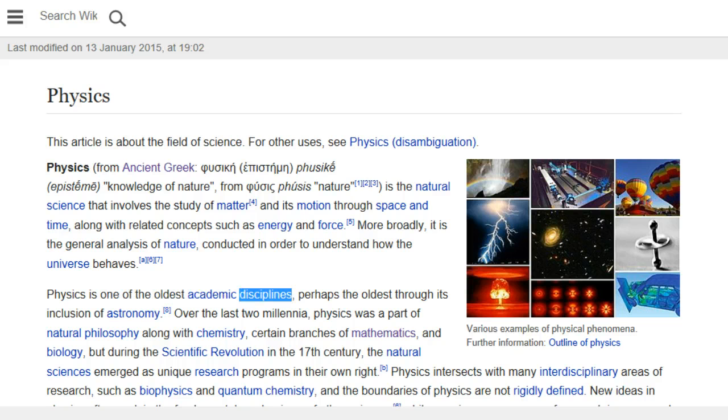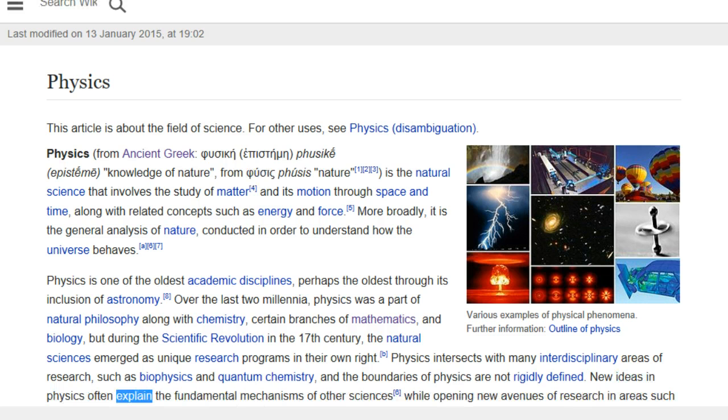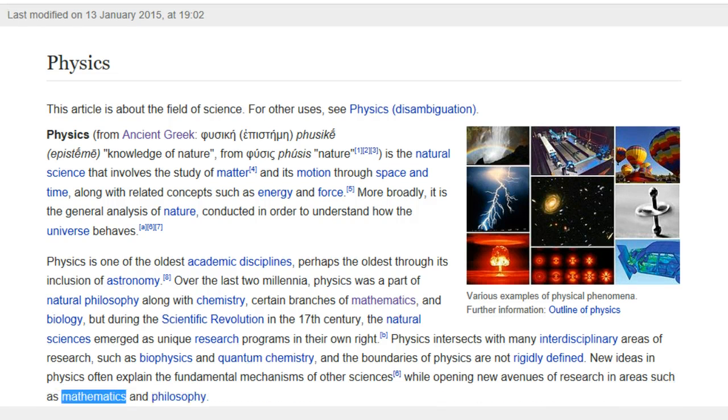Physics is one of the oldest academic disciplines, perhaps the oldest through its inclusion of astronomy. Over the last two millennia, physics was a part of natural philosophy along with chemistry, certain branches of mathematics, and biology, but during the scientific revolution in the 17th century, the natural sciences emerged as unique research programs in their own right. Physics intersects with many interdisciplinary areas of research, such as biophysics and quantum chemistry, and the boundaries of physics are not rigidly defined. New ideas in physics often explain the fundamental mechanisms of other sciences while opening new avenues of research in areas such as mathematics and philosophy.